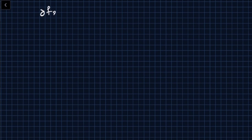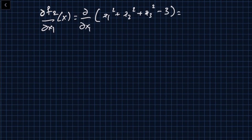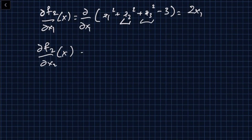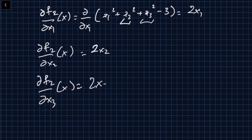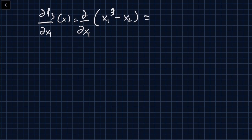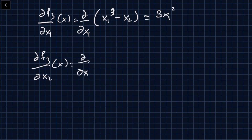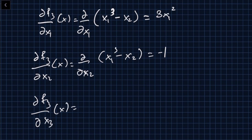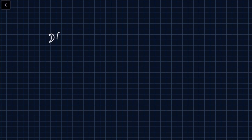For the second row: ∂f2/∂x1 = 2x1, ∂f2/∂x2 = 2x2, and ∂f2/∂x3 = 2x3, since f2 = x1² + x2² + x3² - 3. For the third row: f3 = x1³ - x2, so ∂f3/∂x1 = 3x1², ∂f3/∂x2 = -1, and ∂f3/∂x3 = 0 because there are no x3 terms in f3.